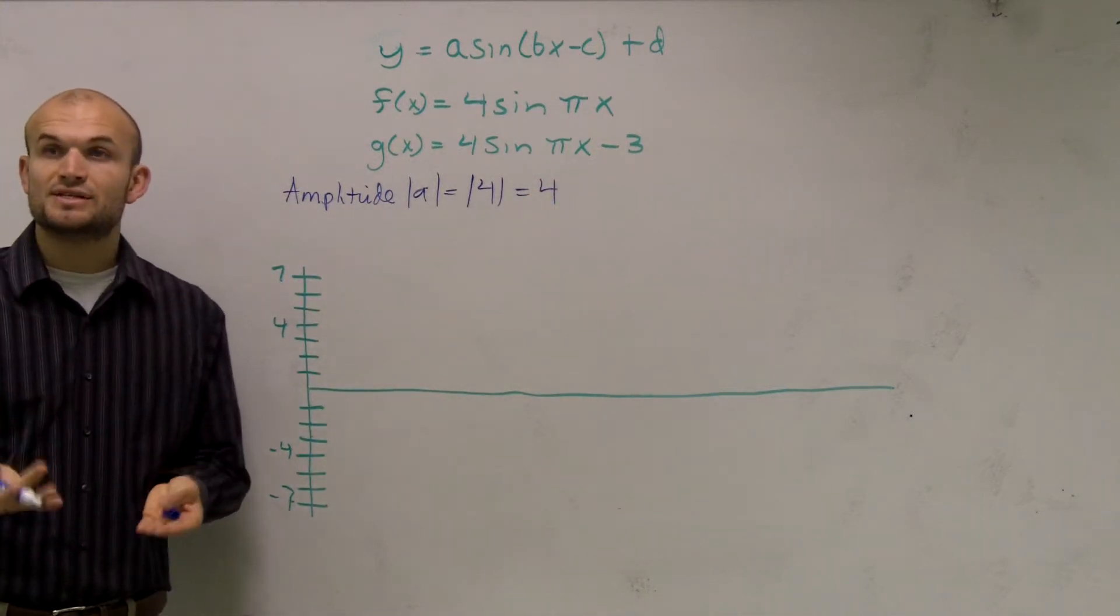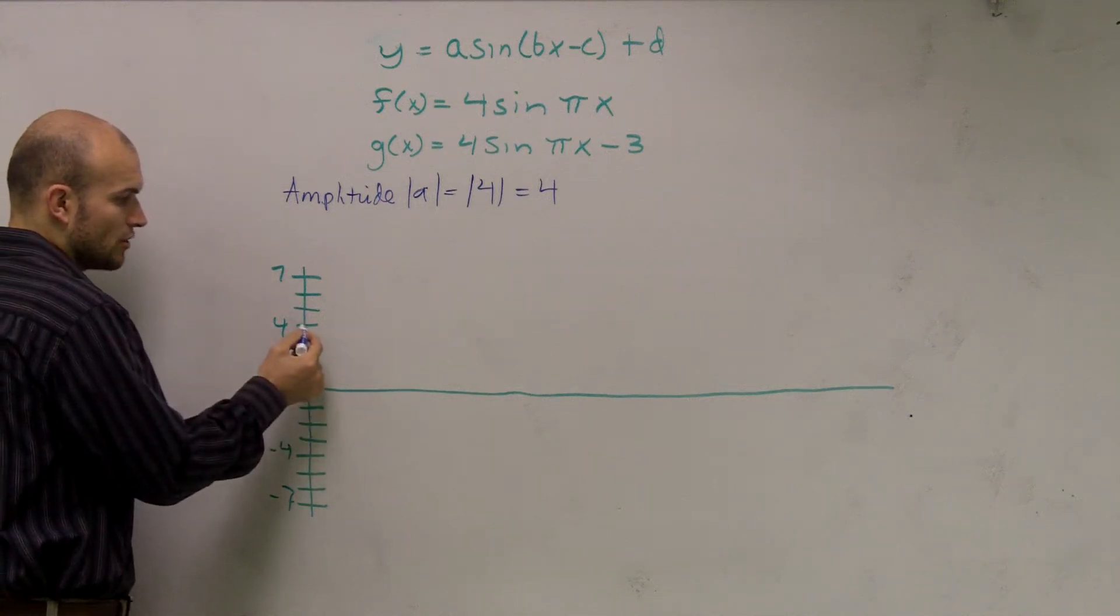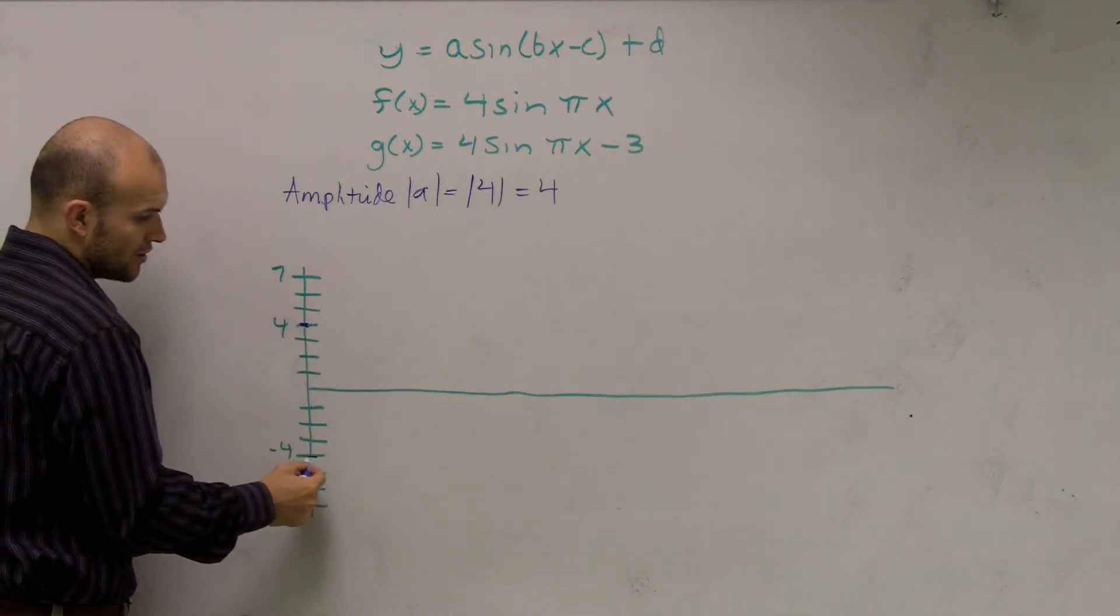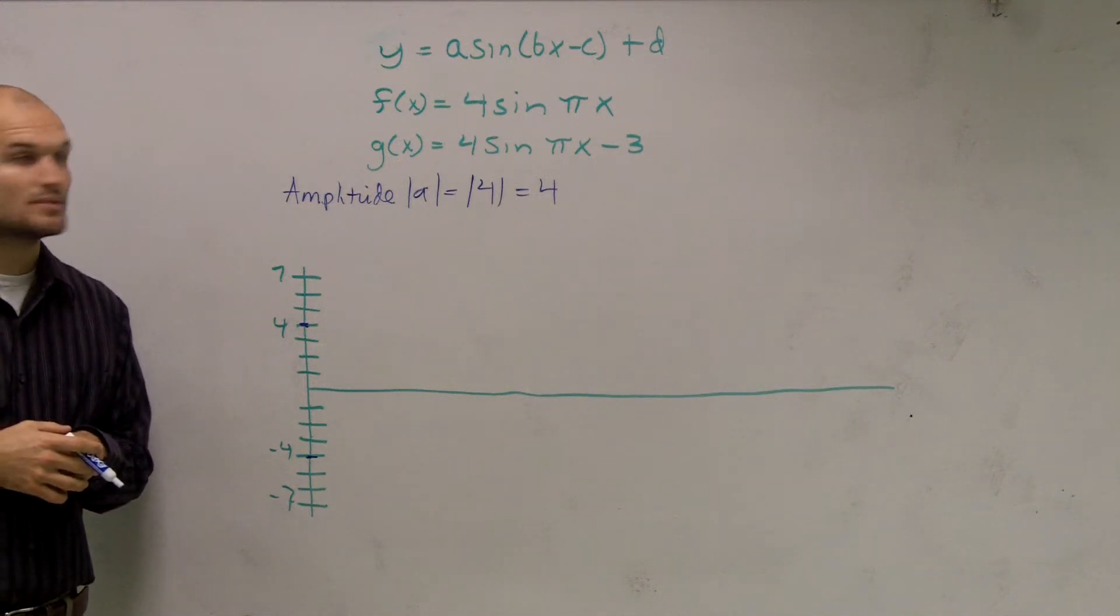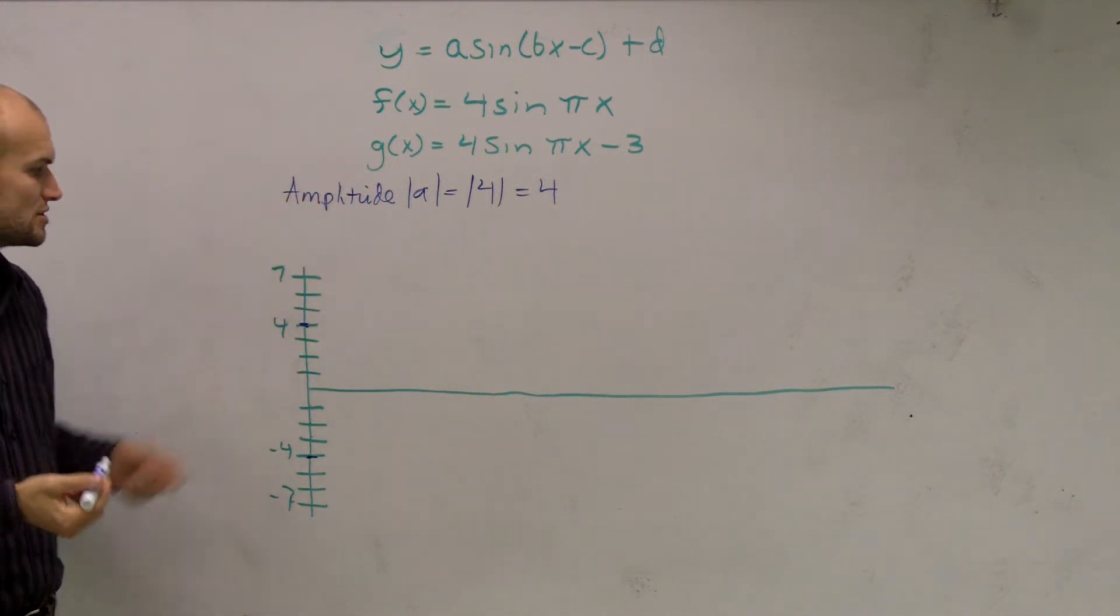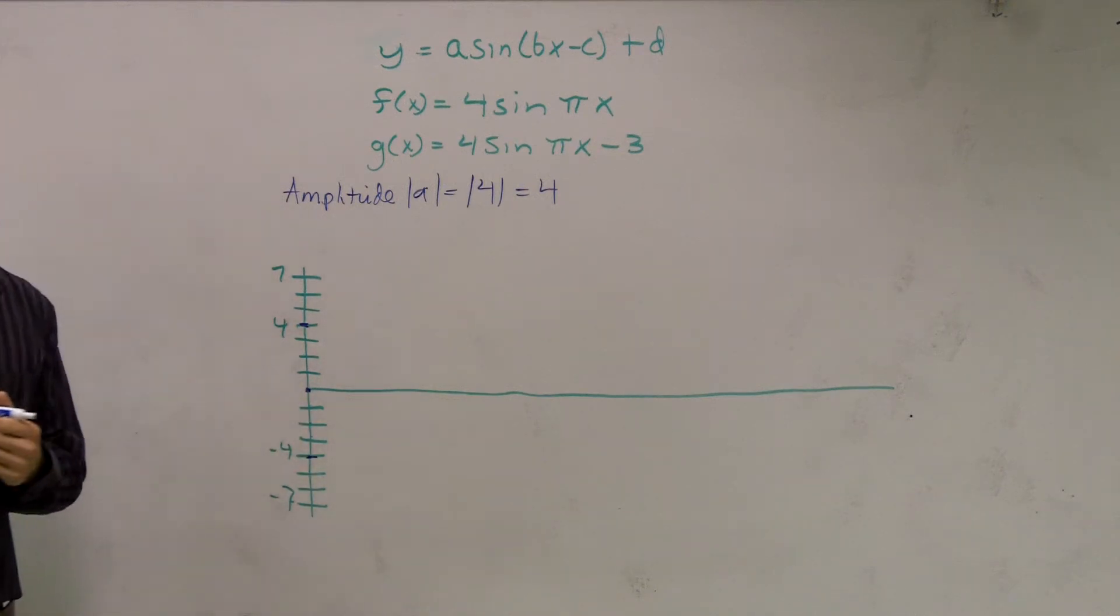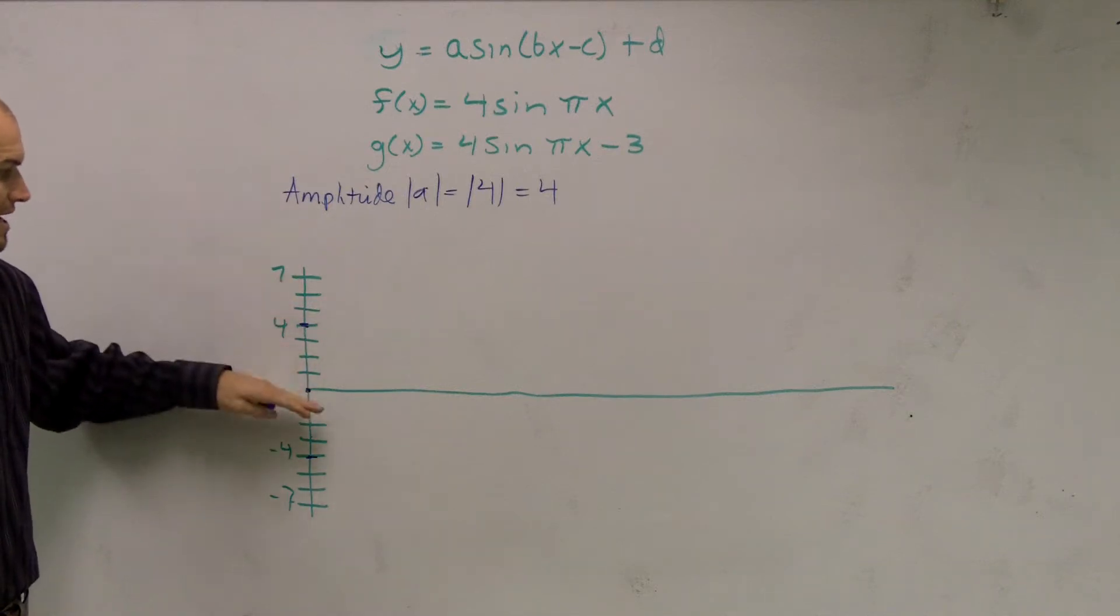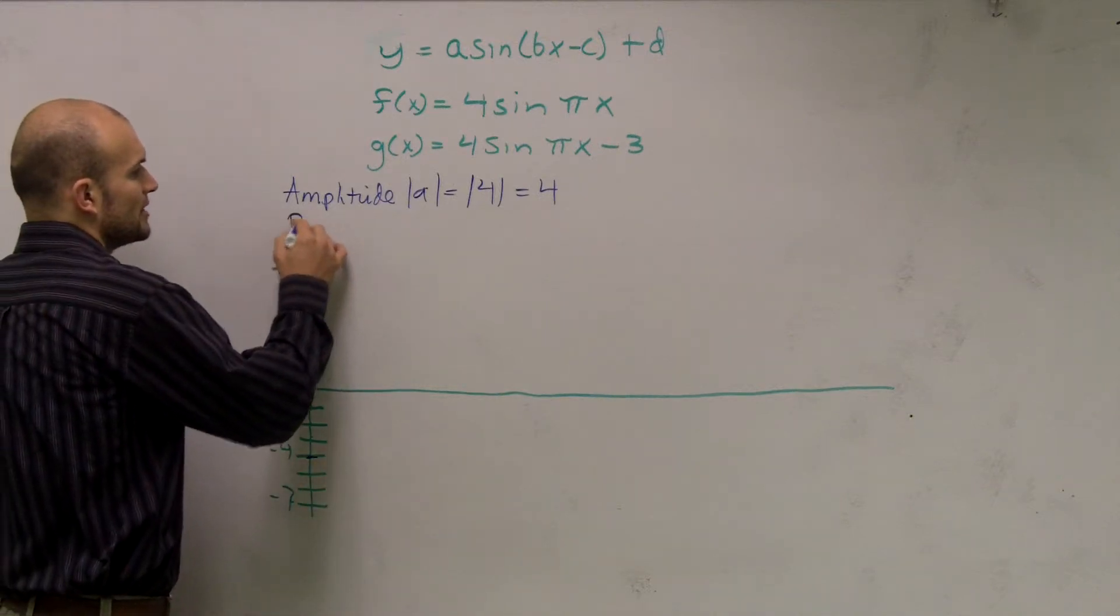Remember, what that tells you is that's going to be your distance from your x-axis that your graph is going to go. So my graph is going to go up four and it's going to go down four. All right, now remember this is the sine function. So if you remember, the sine function crosses at the x and y-axis without any translation. So it's the distance from our x-axis going to go up and down four. Then the next thing we need to do is figure out our period.